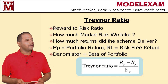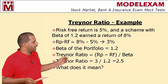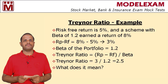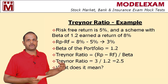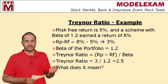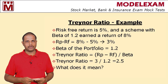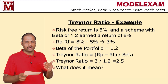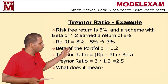Let us see the Treynor ratio with an example. Here the risk free return is 5%, beta is 1.2, and scheme return is 8%. An investor has two options: either go for the risk free rate of 5%, or take risk and invest in a scheme with the potential to generate 8%. We are aiming for 8%, which means we are aiming for an extra 3%. This extra return is called the risk premium. So you divide these two numbers.